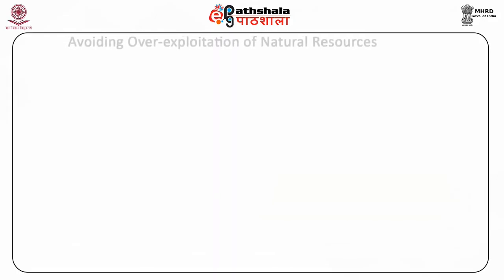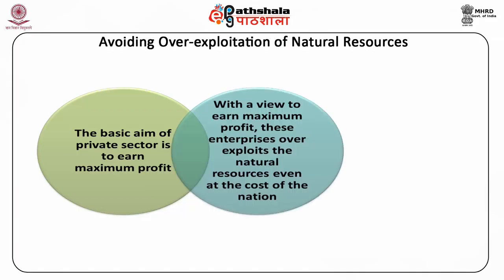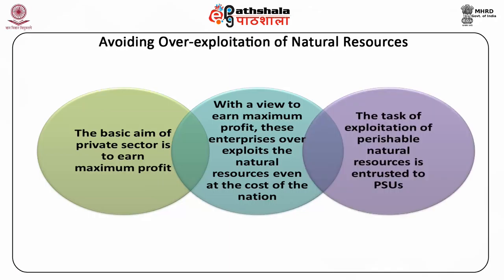Avoiding Overexploitation of Natural Resources: The basic aim of private sector is to earn maximum profit. With a view to earn maximum profit, these enterprises overexploit the natural resources even at the cost of the nation. Therefore, the task of exploitation of perishable natural resources is entrusted to PSUs so that these resources are not totally exhausted.